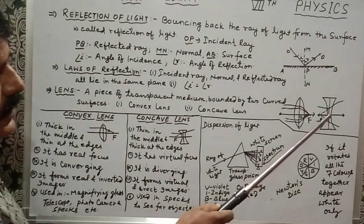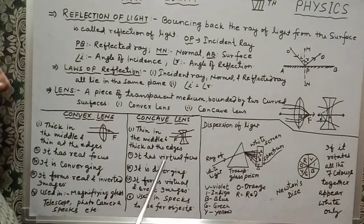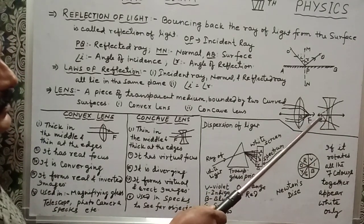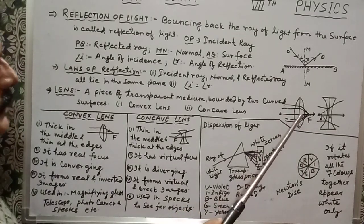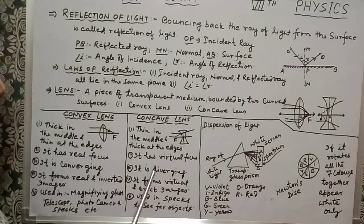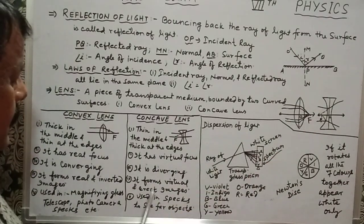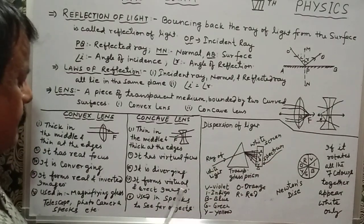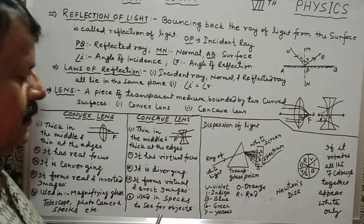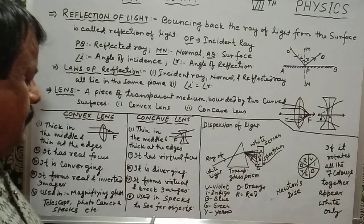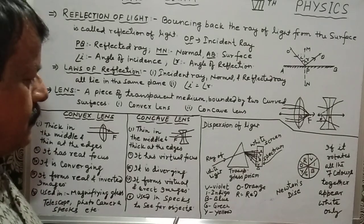The concave lens is thin in the middle and thick at the edges. It has a virtual focus on the left-hand side and a real focus on the right-hand side. It is also known as a diverging lens. It forms a virtual and erect image. It is used in spectacles to see far or distant objects.